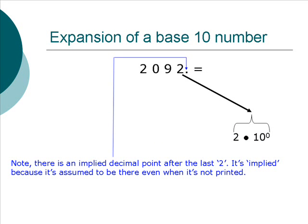We can expand base-10 numbers. Take, for example, 2,092 that we saw on the last slide. Note that there is an implied decimal point after the last 2. It's implied because it's assumed to be there even when it's not printed.